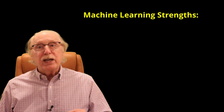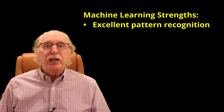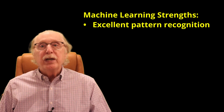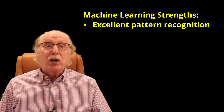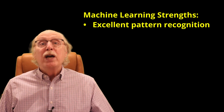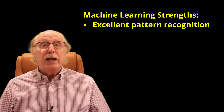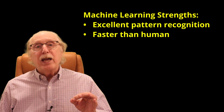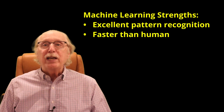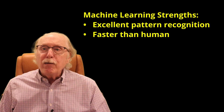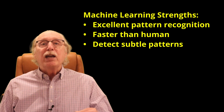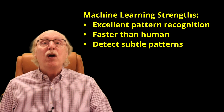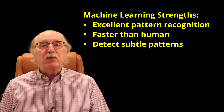This approach has real strengths. Machine learning is excellent at narrow pattern recognition. It can distinguish cats from dogs in photos, detect credit card fraud, and translate between English and French. It can process vast amounts of data far faster than any human, and often find subtleties in the data which would be overlooked by human observers.